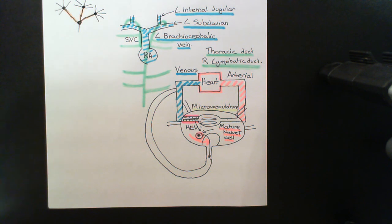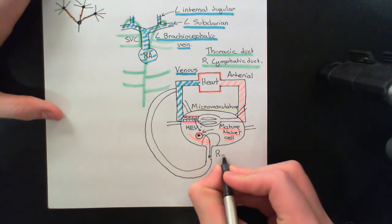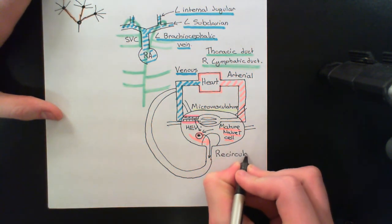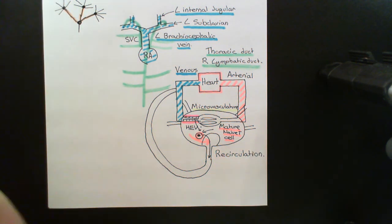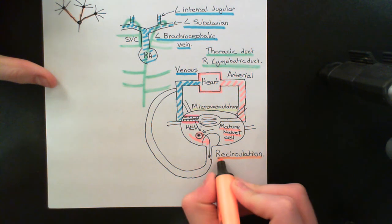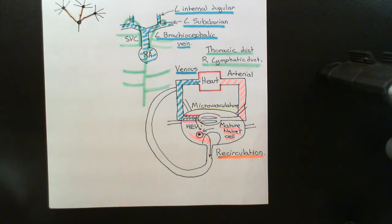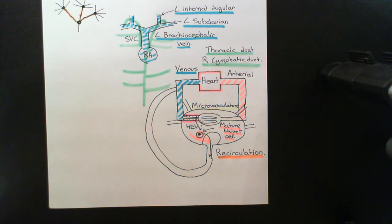We need to make sure that our T cells are continuously moving between the different lymph nodes, continuously rejigging everything to make sure that there is the continual opportunity for the right T cell to be in the right place to see the right antigen fragments and launch an adaptive immune response to that pathogen infecting a certain tissue. This is what's known as the recirculation of T cells.